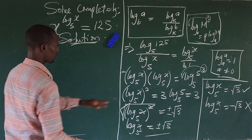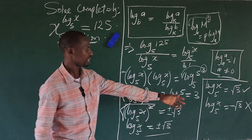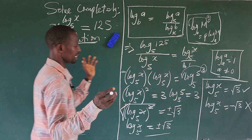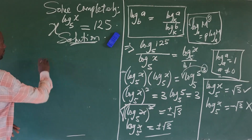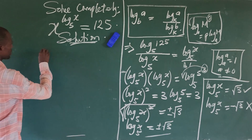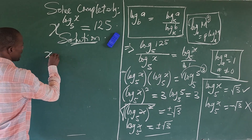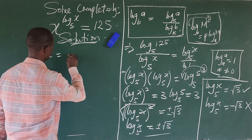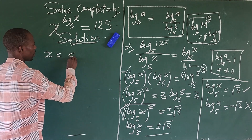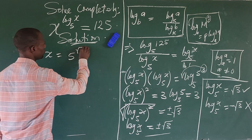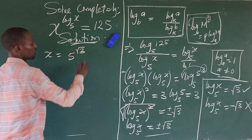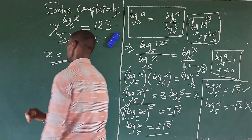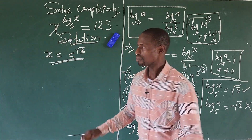Converting from logarithm form back to index form, we get x equals 5 to the power of square root of 3. This is the value of x.